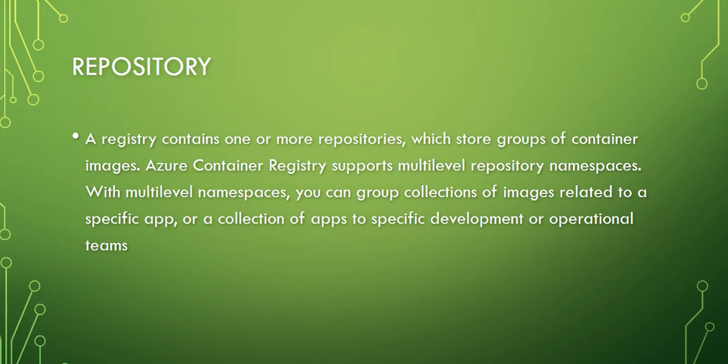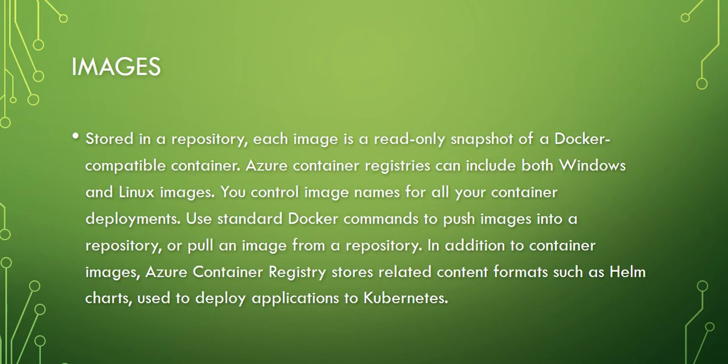A repository stores groups of container images. Azure Container Registry supports multi-level repository namespaces, which allow you to group collections of images related to a specific app or a collection of apps for specific development or operational teams. Images stored in a repository are each a read-only snapshot of a Docker-compatible container.